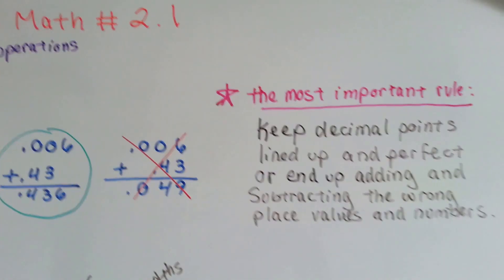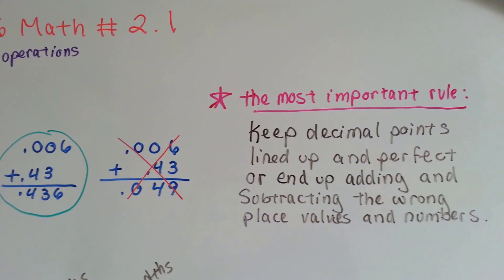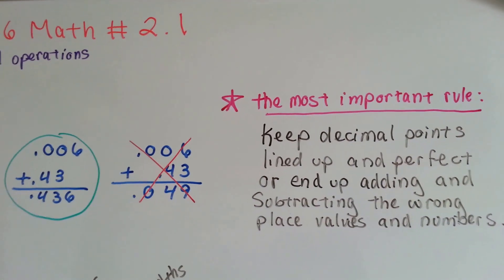The most important rule is you keep your decimal points lined up and perfect or end up adding and subtracting the wrong place values and numbers.